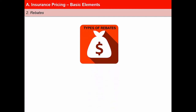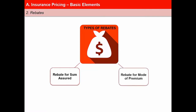Life insurance companies may also offer certain types of rebates on the premium that is payable. There are two types of rebates. First is rebate for sum assured. Premiums can be paid annually, half-yearly, quarterly, or monthly. The more frequent the mode, the more is the cost of service. Insurers encourage half-yearly or annual premium payments by offering some rebate, as these enable savings in administrative costs compared to quarterly or monthly modes.